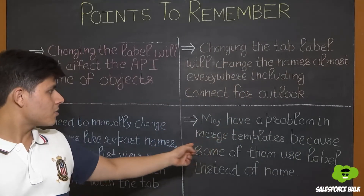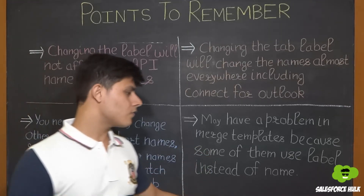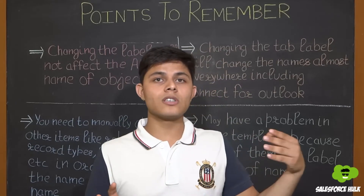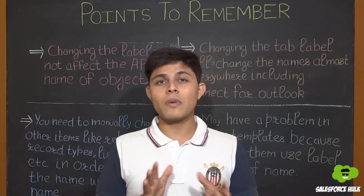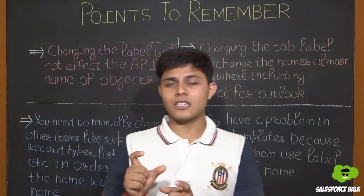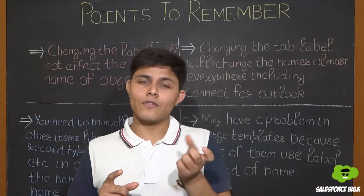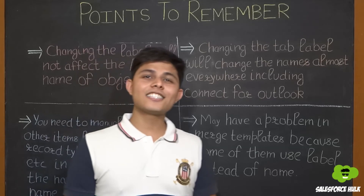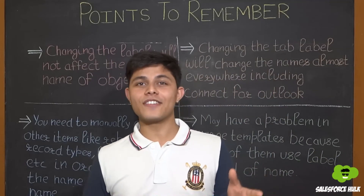You may also have a problem with merge templates because some of them use labels instead of API names. In merge templates, sometimes API names are used and sometimes labels are used, so you may face issues. Take care to know what the tab name is versus the API name — if you're facing a problem with the API name, try using the tab name and it should work. That's all you need to consider when renaming a tab and field name.